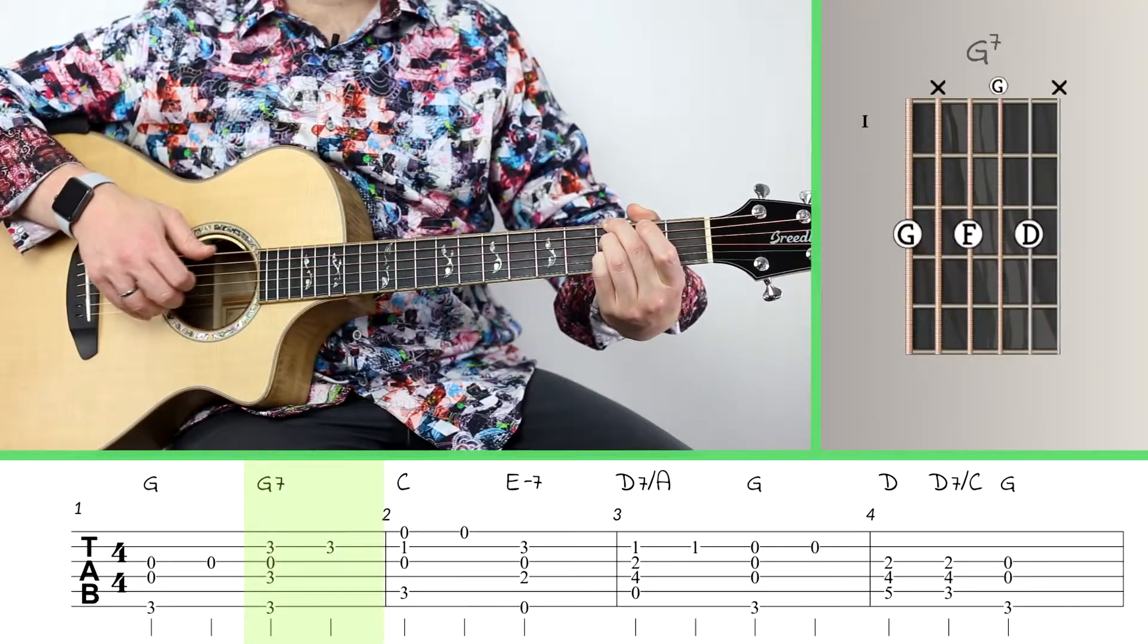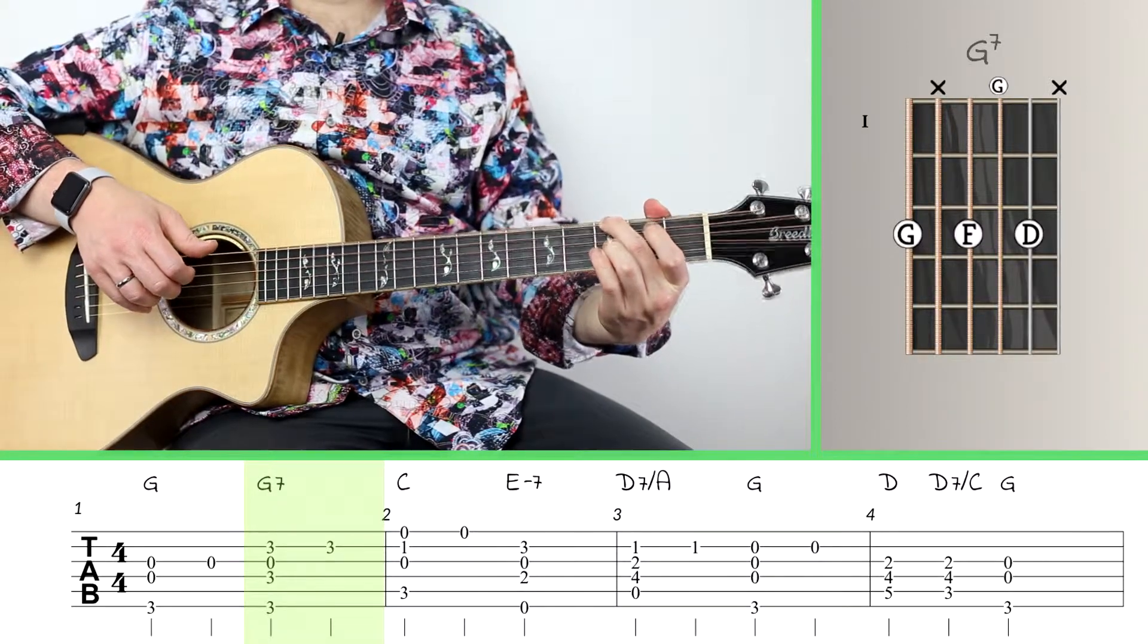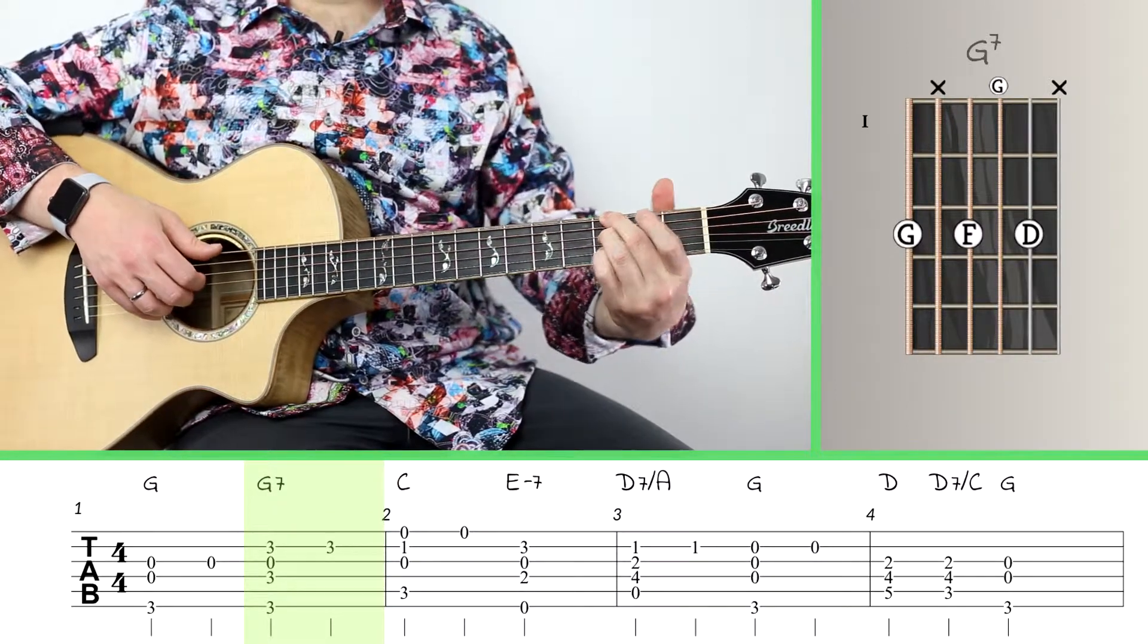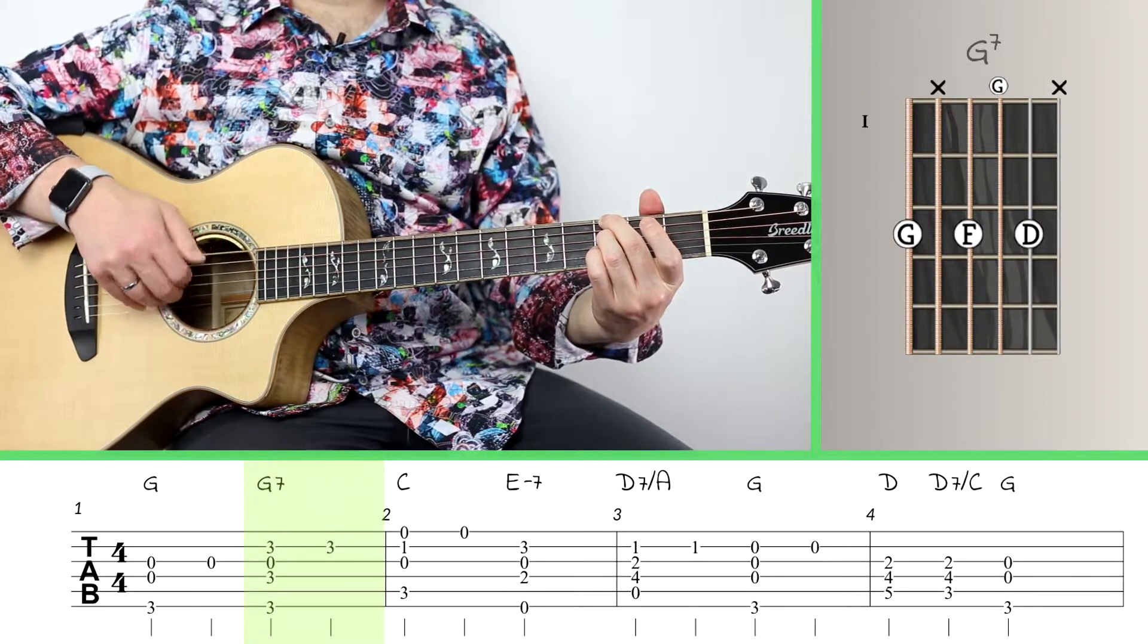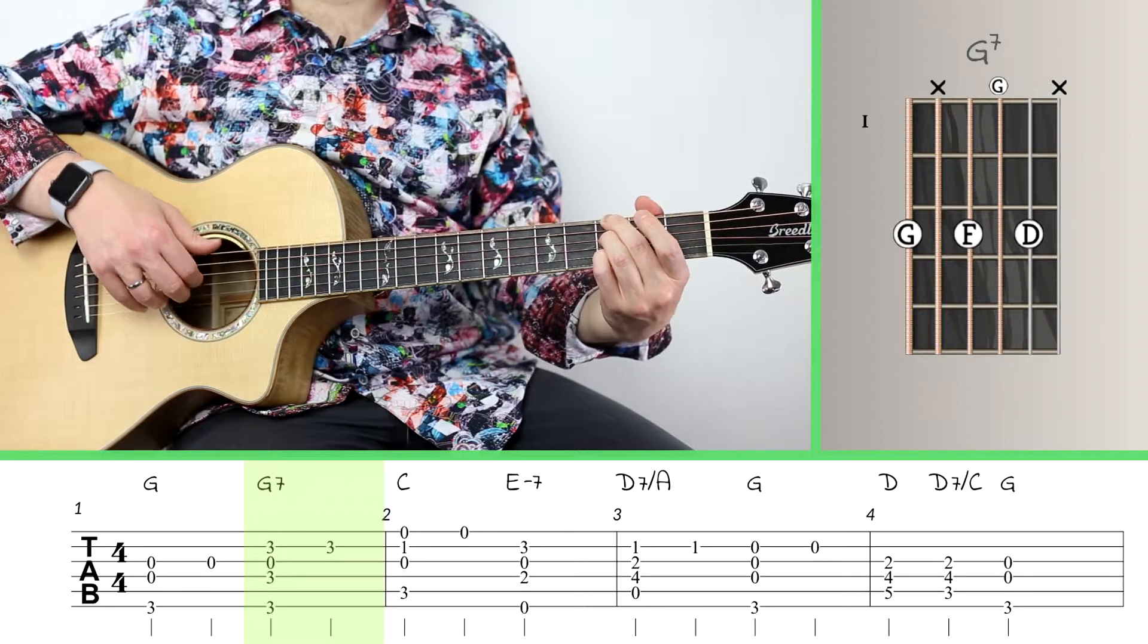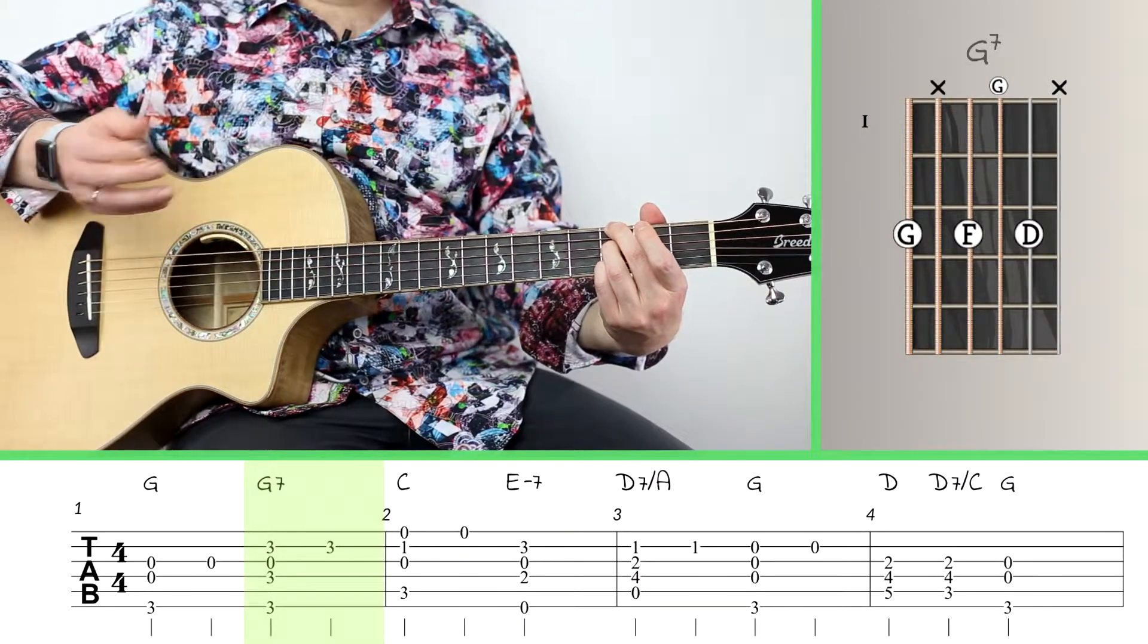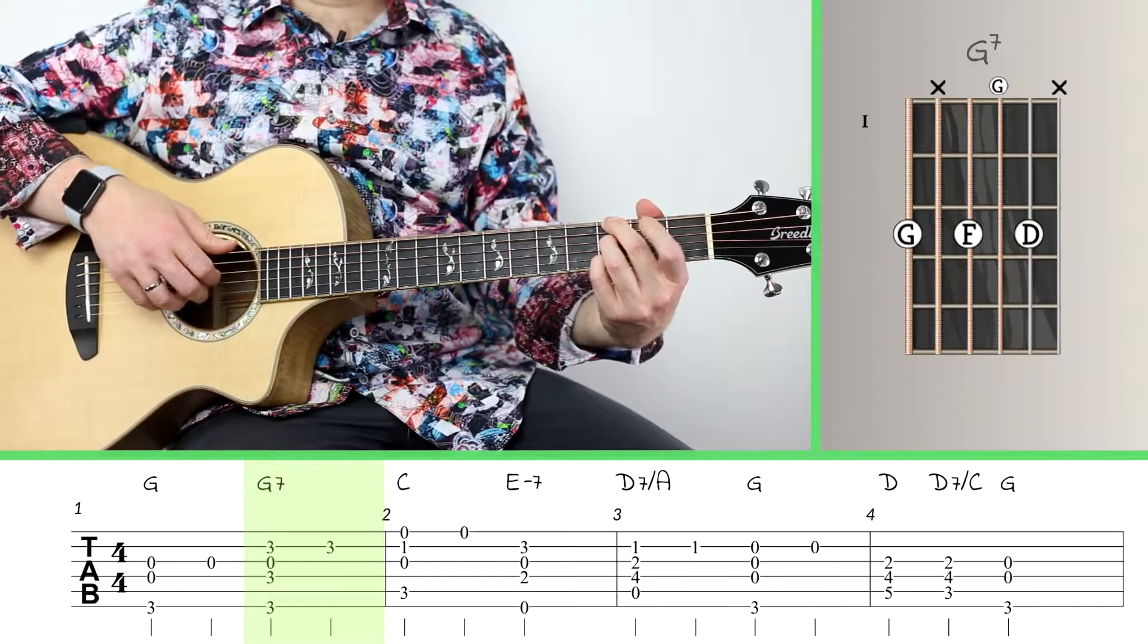And now we're going to G7. So because I've got my second finger on G of the third fret already on the big string, I just need to put my third finger on the third fret of the fourth string, and my fourth finger, which is my pinky, on the third fret of the second string. And that makes a really nice voicing for G7. That's actually my favorite open voicing of the G7 chord.